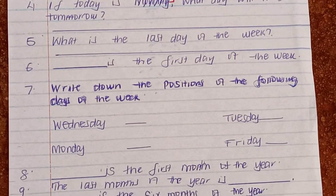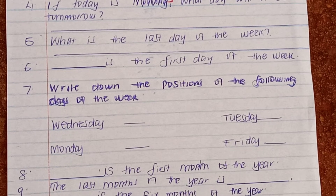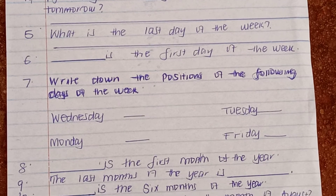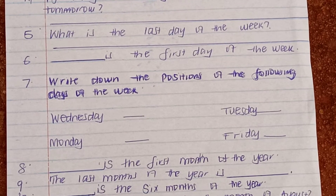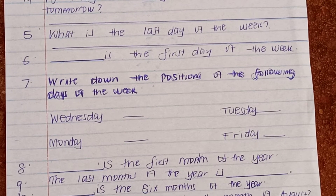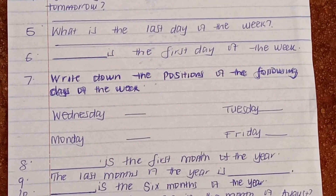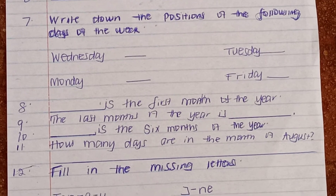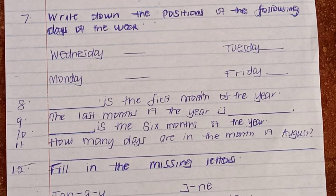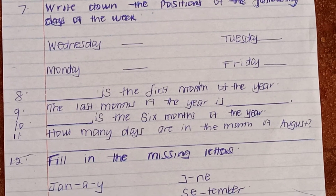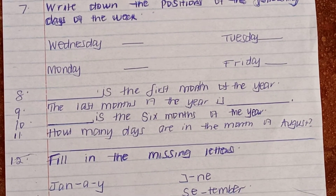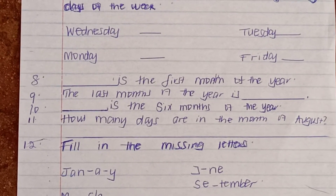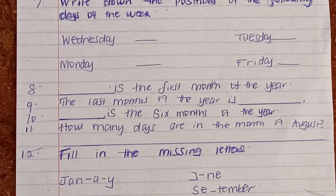Number seven, write down the positions of the following days of the week: Wednesday, Monday, Tuesday, Friday — write their positions. Number eight, dash is the first month of the year. Dash is the first month of the year. Number nine, the last month of the year is dash. The last month of the year is dash.